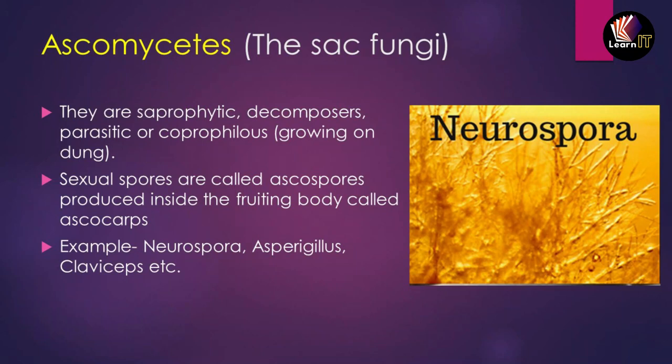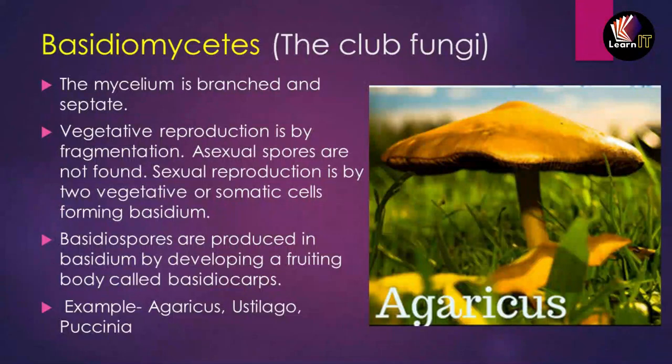The second type of fungi is Ascomycetes, also known as sac fungi. These are saprophytic, decomposers, parasitic, or coprophilous — meaning they grow on dung. Sexual spores are called ascospores, produced inside a fruitful body called ascocarp. Examples include Neurospora, Aspergillus, and Claviceps.